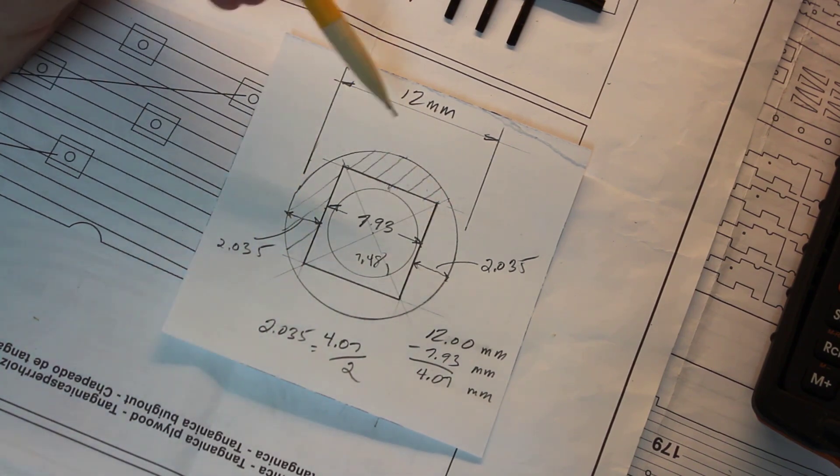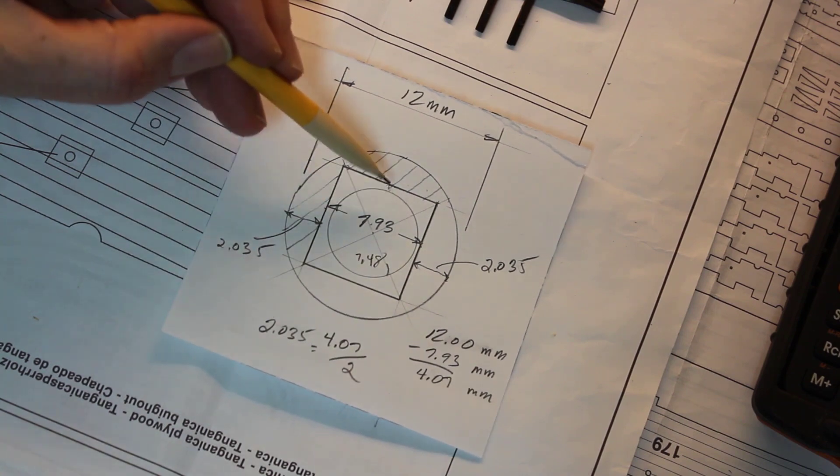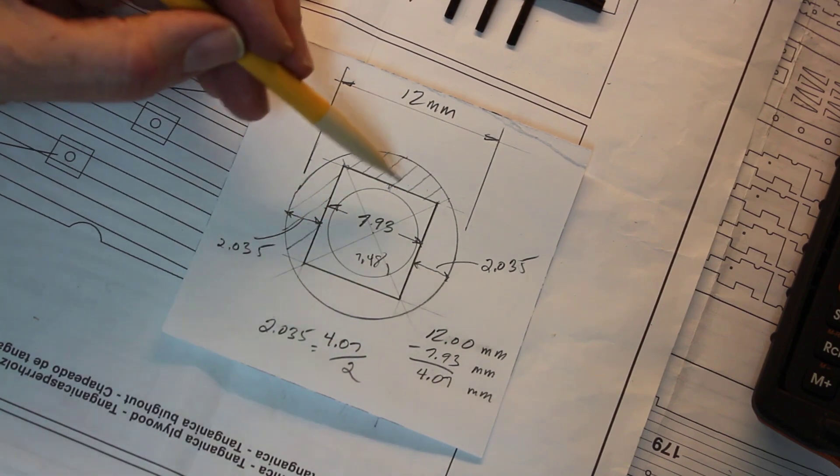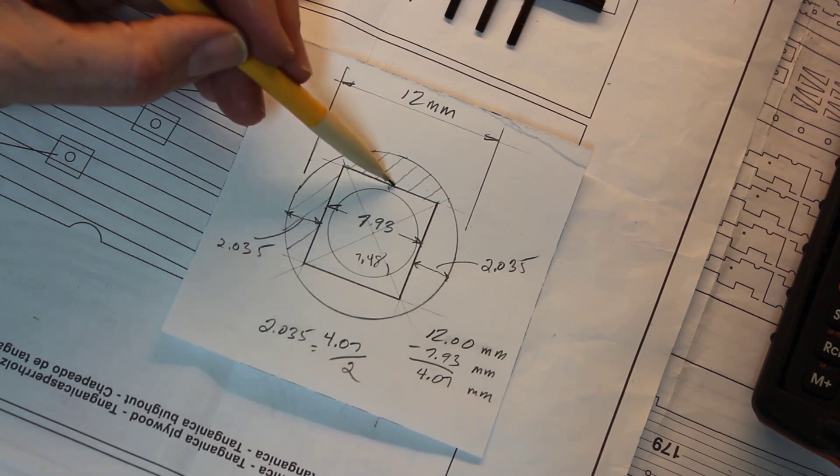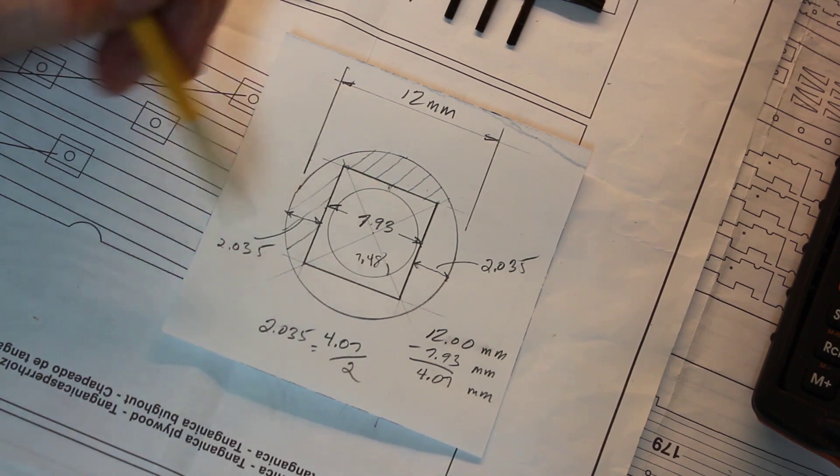So we're going to mill down the flat from here to here, roughly a little under 2 millimeters, maybe 1.97. Then we'll flip the dowel around and do the rest of the sides.